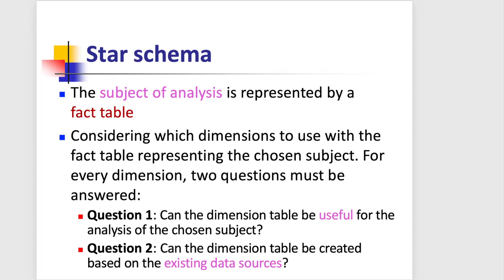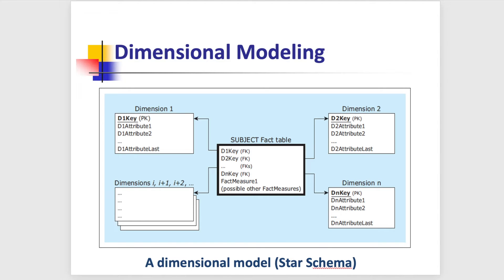When we want to design a star schema, we have to ask two questions. These two questions can help you identify which dimensions to use. The fact table is simply the subject of our analysis. For deciding on dimension tables, first we ask whether the dimension table can be useful for the analysis of the chosen subject, and second, whether that dimension table can be created based on the existing data sources.